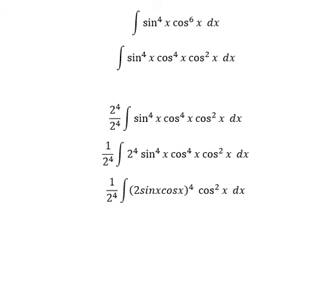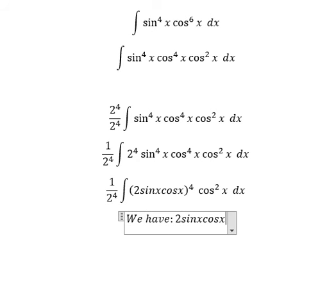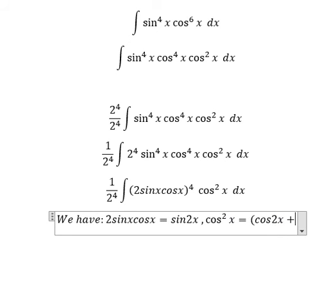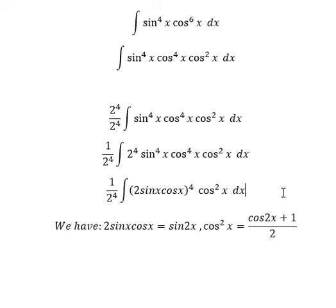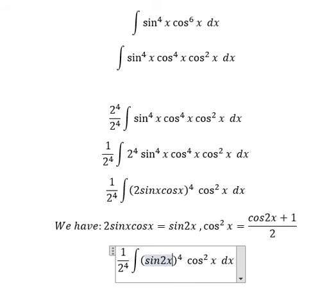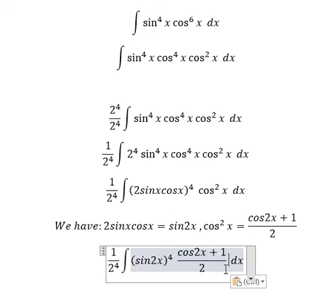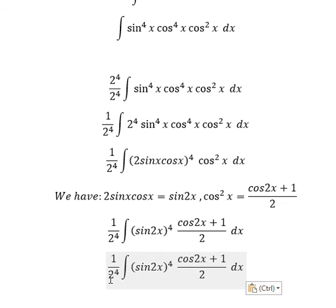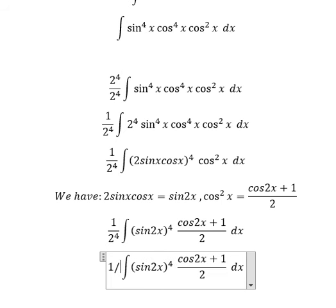Next, we have the formula here. For cosine x squared, we substitute cosine x plus 1 over 2. So this one is about cosine x. Cosine x squared, we substitute with this formula. So number 2 with 2 to the power of 4 gives us 1 over 32. So we have cosine x plus 1.